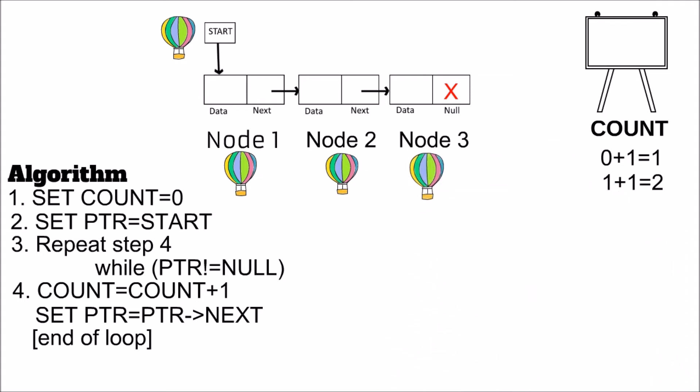Now similarly, we are visiting node 3. But you can see that when our hot air balloon or PTR accesses the data part, it will increment to 3, because 2 plus 1 equals 3. The data part doesn't hold null, the link part or next part holds null.